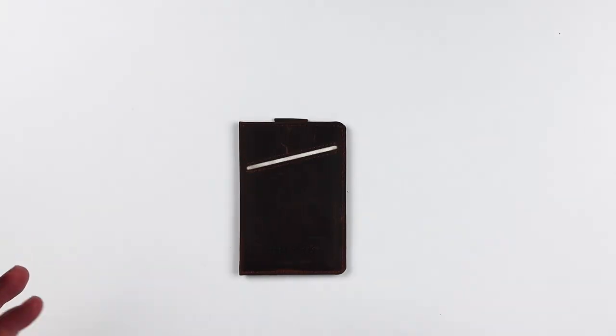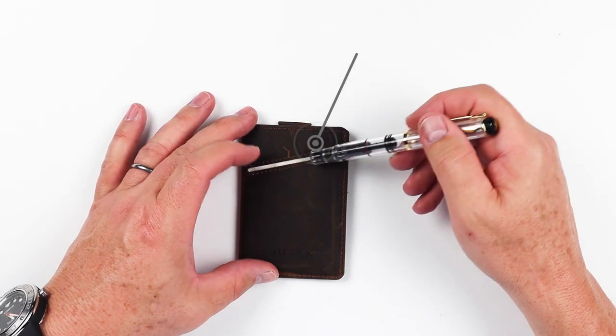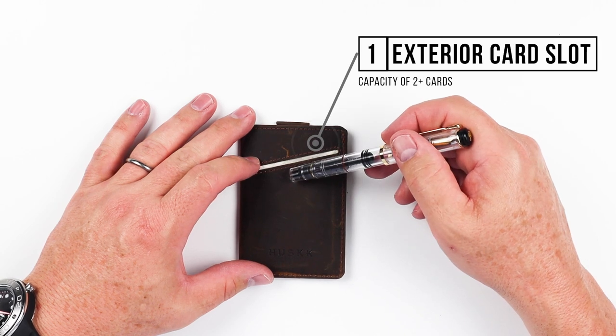Now let's do a feature review of the Husk Slim Wallet. On the front, we have a quick access card slot here. You can put cash in here as well.